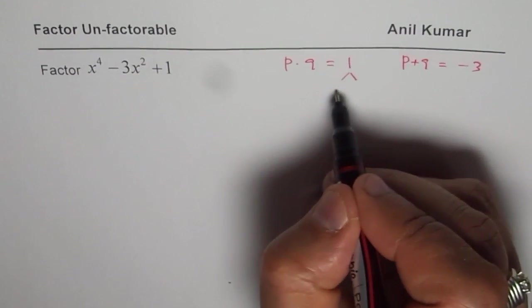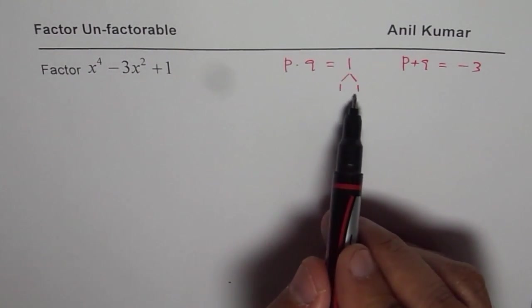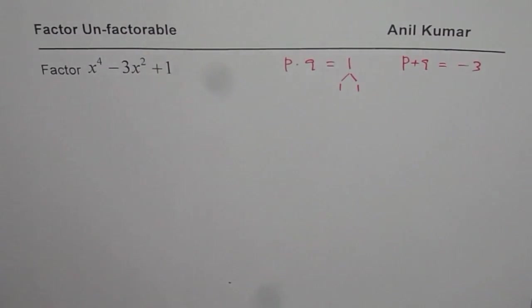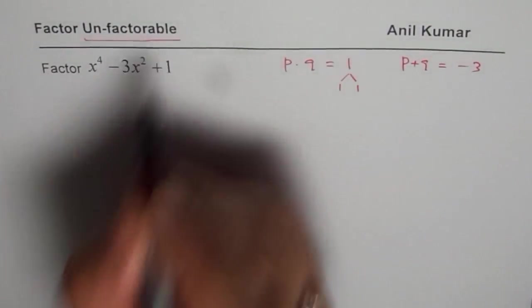we are looking for 1 and sum of p and q as -3. Well, 1 you can only get by multiplying 1 by 1. When you add and subtract these ones, you don't get -3. Therefore, we are saying that this is unfactorable.